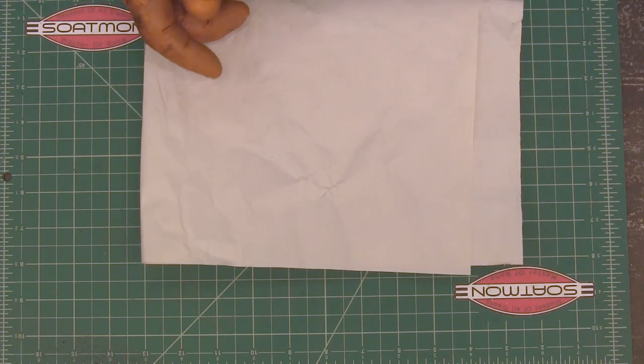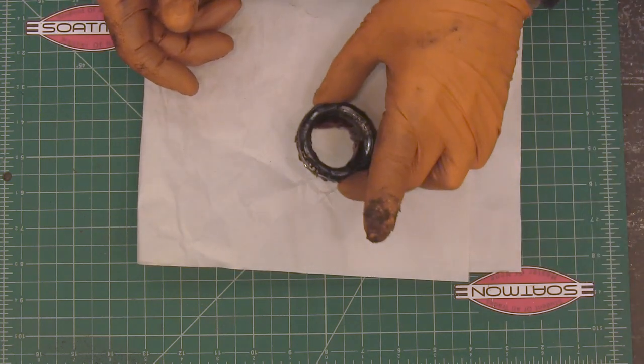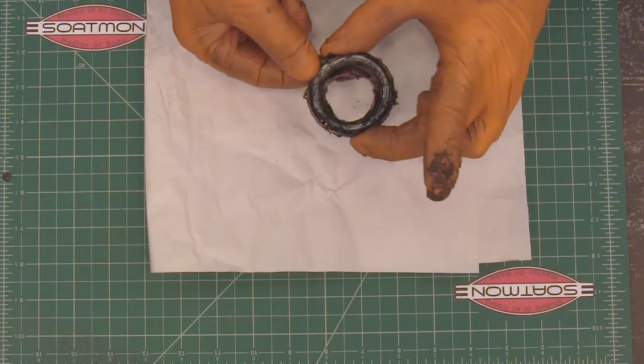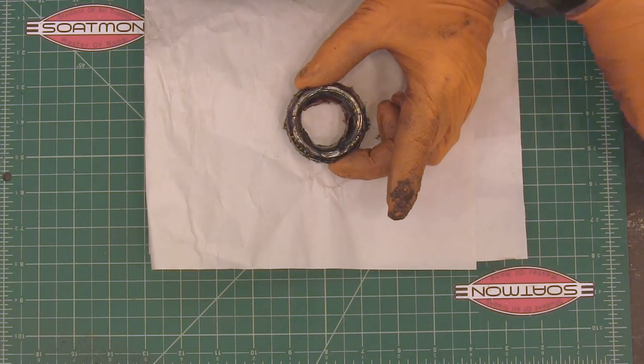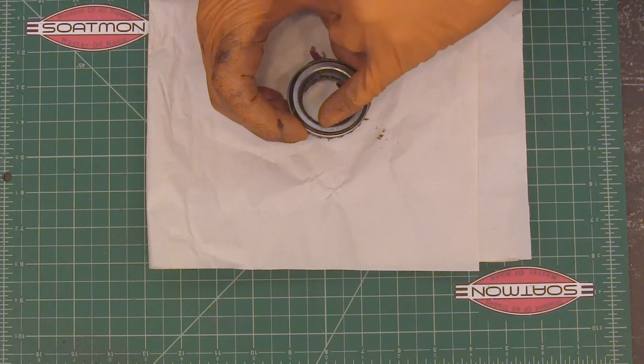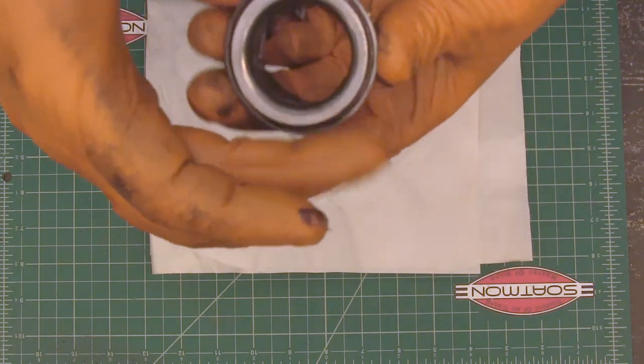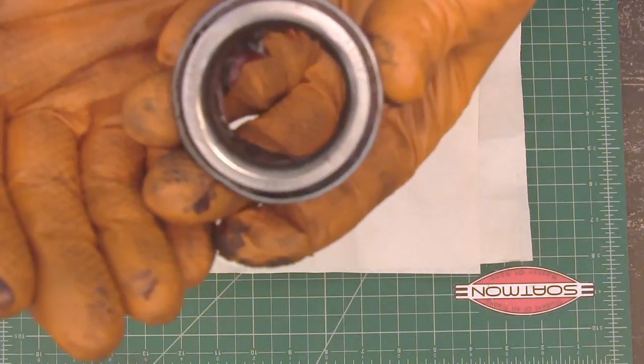Now the easiest way to do that is you take one of your bearings, like this one, and if you wipe it down it usually on this surface will have a number.